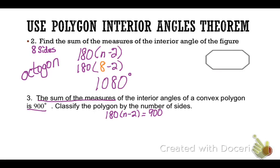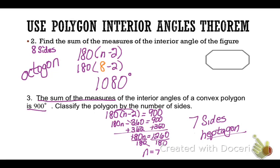Because I'm going to say the sum of the measures is 900. Well, I also know it's 180 times n minus two. So, I'm kind of working backwards here, and I'm going to solve this by distributing and solving this equation, and I can find the number of sides of this polygon is seven. So this is a heptagon.